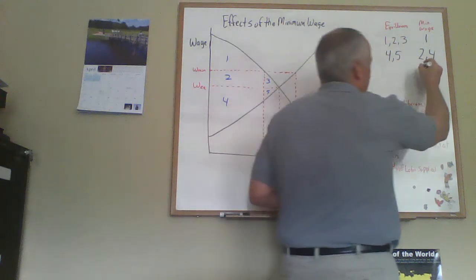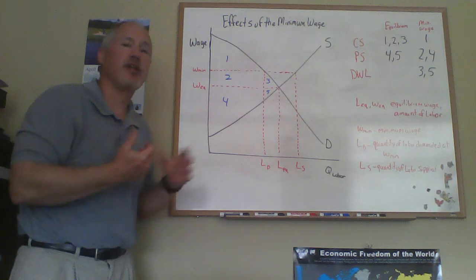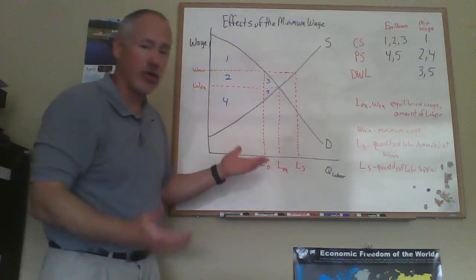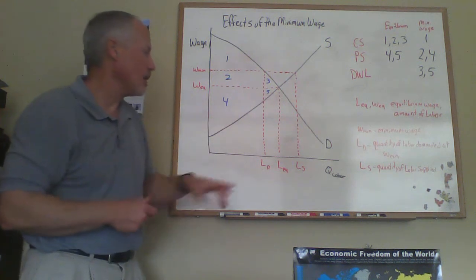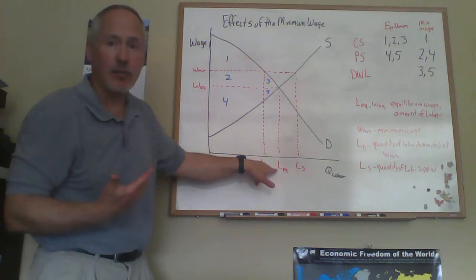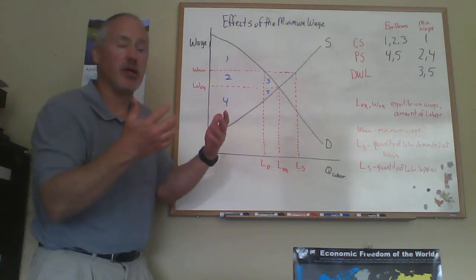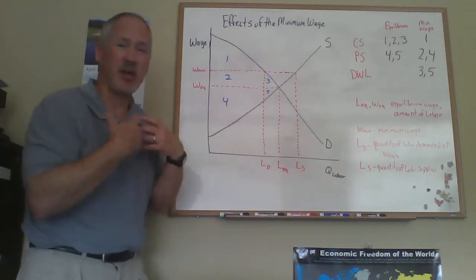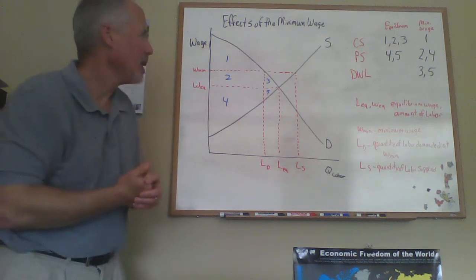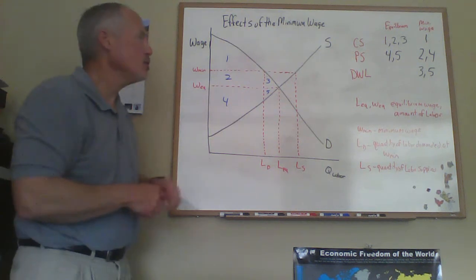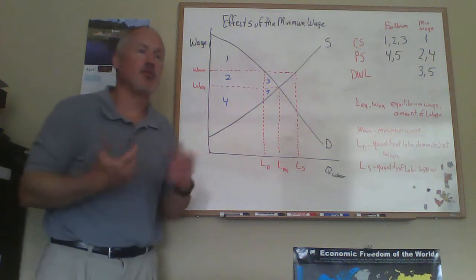Price controls are inefficient. If you end up with a smaller quantity than the equilibrium quantity, you've got some inefficiency. Areas 3 and 5 are the deadweight loss — these represent workers who don't get hired with the minimum wage in place. If those workers aren't working, they can't generate any surplus: they lose out on producer surplus themselves, and they're not generating any consumer surplus for the firms hiring them. Area 2, however, is a transfer — it was consumer surplus going to firms in equilibrium and becomes producer surplus for the workers with a minimum wage in place.